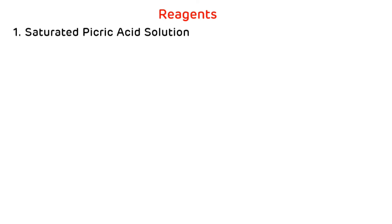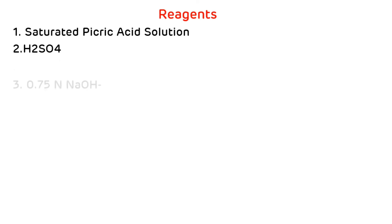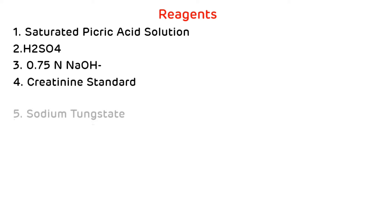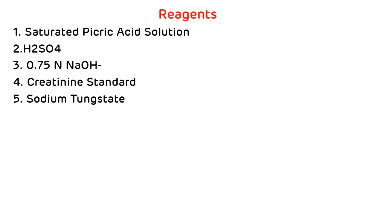Reagents required for the estimation of serum creatinine by Jaffe's method: first, saturated picric acid solution; then sulfuric acid; then 0.75 normal NaOH; then creatinine standard; and sodium tungstate. These are the various reagents required for the estimation of serum creatinine.